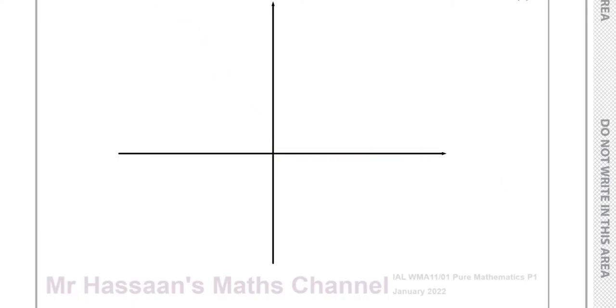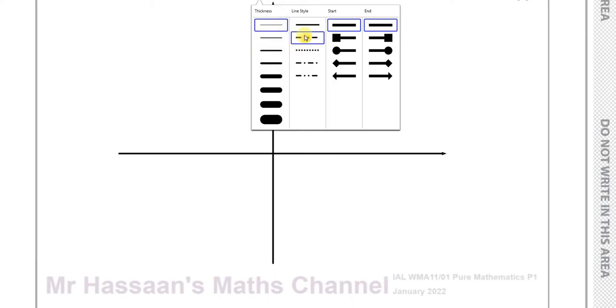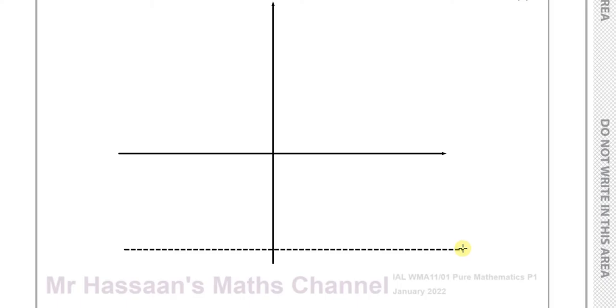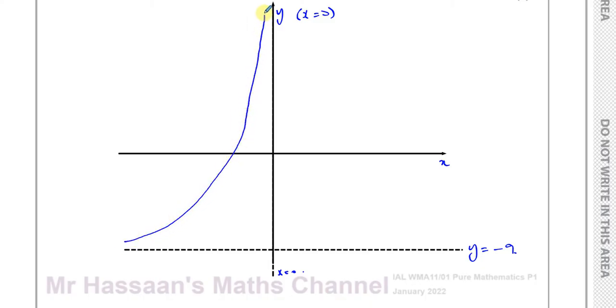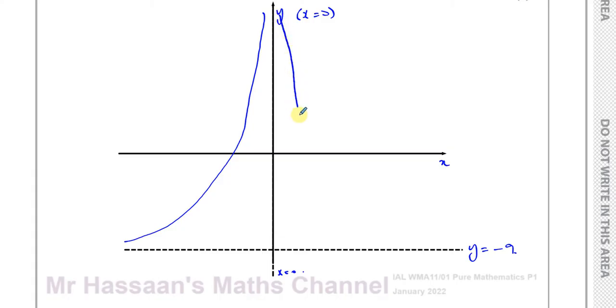Now I'll draw the graph properly. We have the y-axis and x-axis. There's an asymptote at y equals negative 9, and the y-axis itself is the vertical asymptote x equals 0. The graph has the same reciprocal shape but shifted 9 units down, and is symmetrical about the y-axis. This is y equals 1 over x squared minus 9.